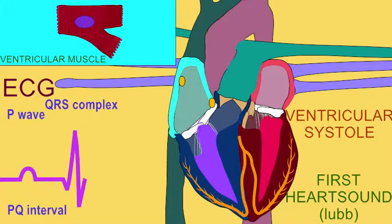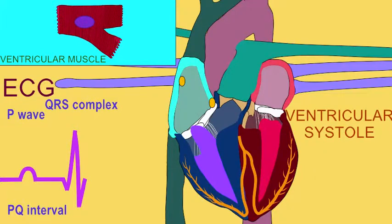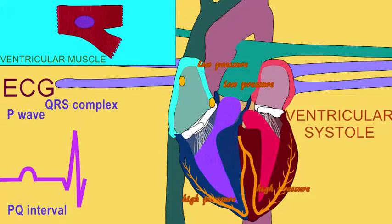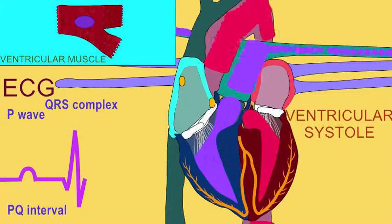The first heart sound is caused by the turbulence in the blood as the AV valves shut in the QRS complex. For a split second, the ventricles are a closed chamber because both the AV valves and semilunar valves are shut. And so then the pressure rises and rises and rises. When the pressure in the ventricles exceeds the pressure in the vessels — the pulmonary trunk and the aorta — then the semilunar valves are forced open and blood can be ejected from the ventricles.